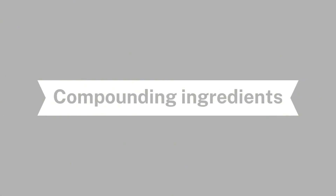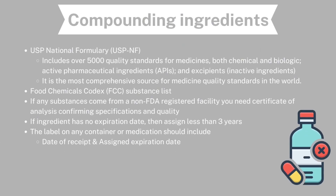The ingredients used when compounding — the USP National Formulary includes over 5,000 quality standards for medicines. They have the active pharmaceutical ingredients and their excipients. It is the most comprehensive source for medicine quality standards in the world.